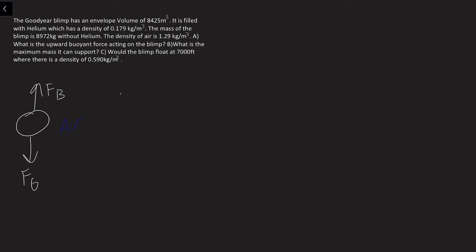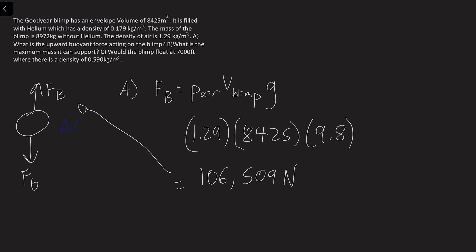But for A, we only need to find the buoyant force acting on the blimp. So the buoyant force is equal to density of the air times the volume of the blimp multiplied by gravity. So all of these are given. So we have 1.29 for the density of the air. The volume of the blimp is 8,425 cubic meters. Then gravity is 9.8 meters per second squared. And this will give you 106,509 newtons acting upward as the buoyant force.